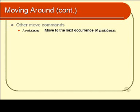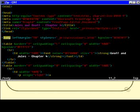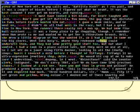Once you've specified that you want to search for a particular pattern, you can use N to move to the next occurrence, or capital N to move to the previous occurrence of that same pattern. So if I wanted to search for the next occurrence of the word 'body' in my document, I would simply type in N. And there's another instance of the word 'body'.